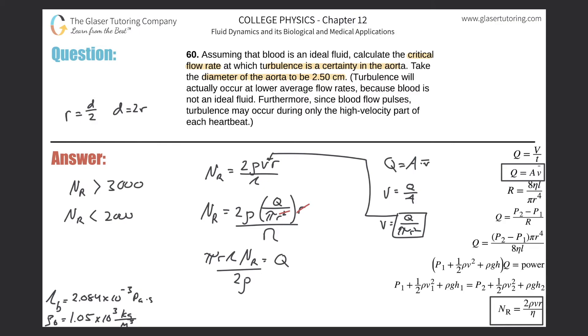The diameter they told us is 2.5 centimeters, which means 0.025 meters. We need it in meters. Take this and divide by 2 to get our radius.